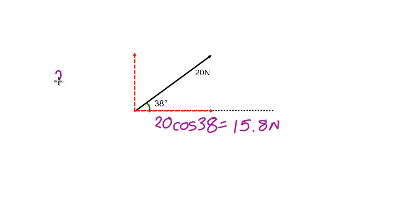So in this case, it will be 20 multiplied by sine of 38 degrees, which is equal to 12.3 Newtons. So there we have one vector divided into its horizontal and vertical components.